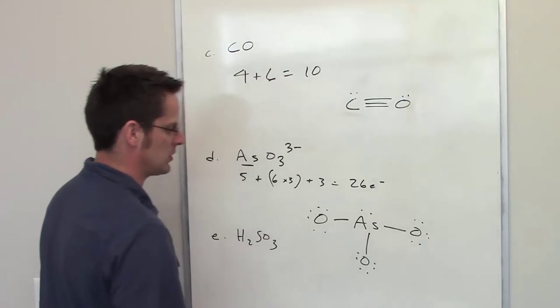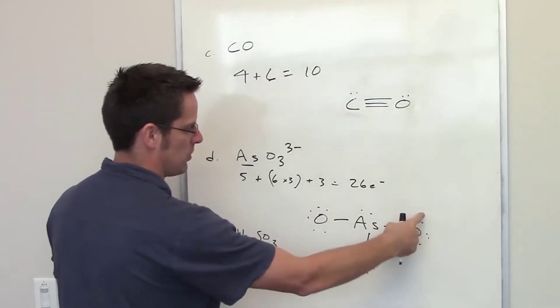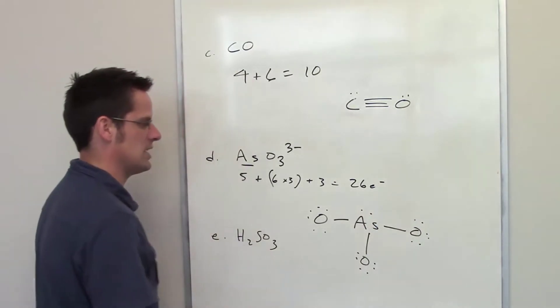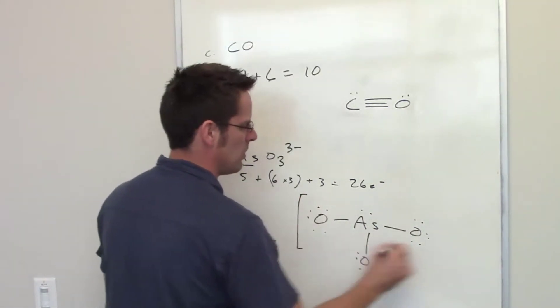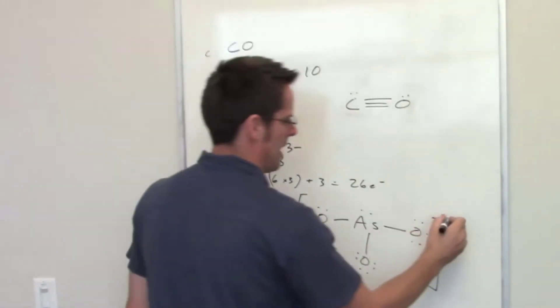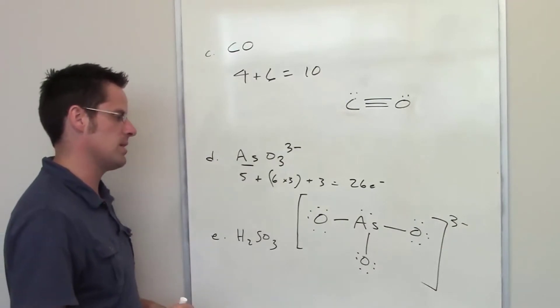Does that have 26 total electrons in the system? I've got 8 here, 16 here, 24 here, plus another 2, that's 26. That is going to be the Lewis structure for this molecule, and often what we do for charged species is we'll write brackets around them and then write 3 negative to indicate that that entire molecule has a charge of 3 minus.